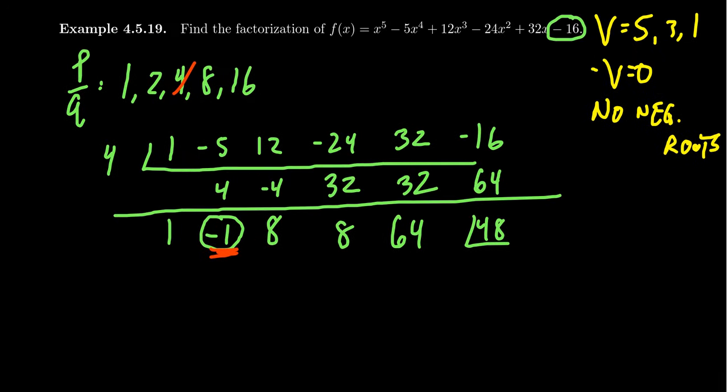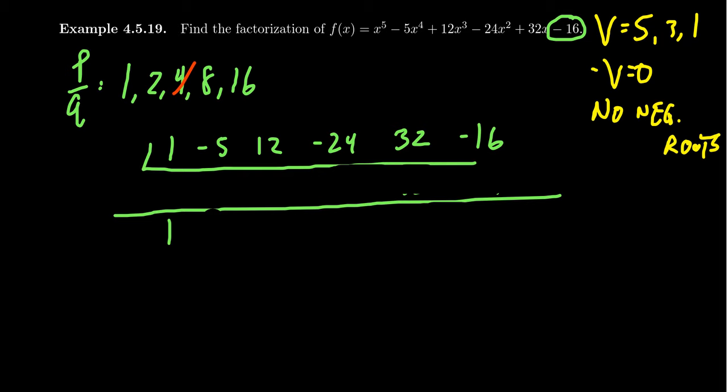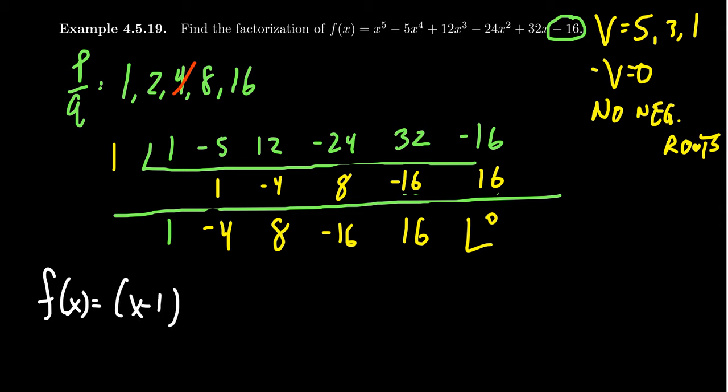So I'm going to try 1 this time. You bring down the 1. 1 times 1 is 1. Minus 5 is negative 4. Times 1 is negative 4. Plus 12 is 8. Times 1 is 8. Minus 24 is a negative 16. Times 1 is negative 16. Add that to 32, you get 16. 1 times 16 is 16. Plus 16, you get 0. So we see that x equals 1 was in fact a root. My guess of trying something smaller actually paid off. So now we can factor f. Whenever you find a root, stop and make a factorization. You're going to get x minus 1, and then look at the depressed polynomial quotient. We're going to get x to the 4th minus 4x cubed plus 8x squared minus 16x plus 16.